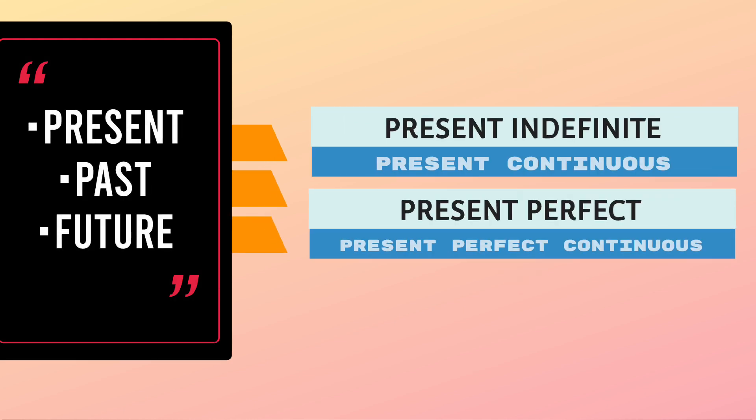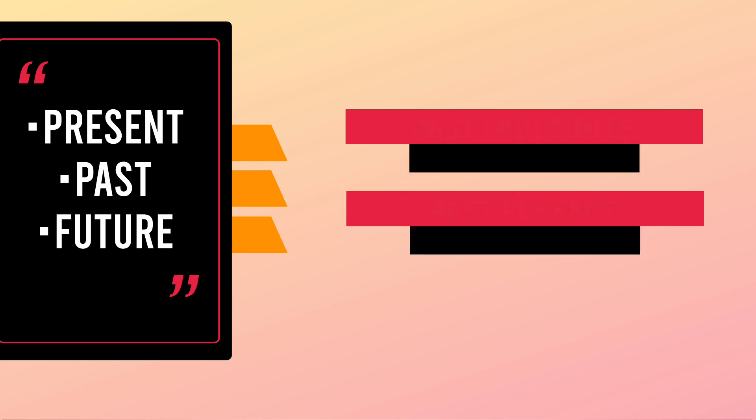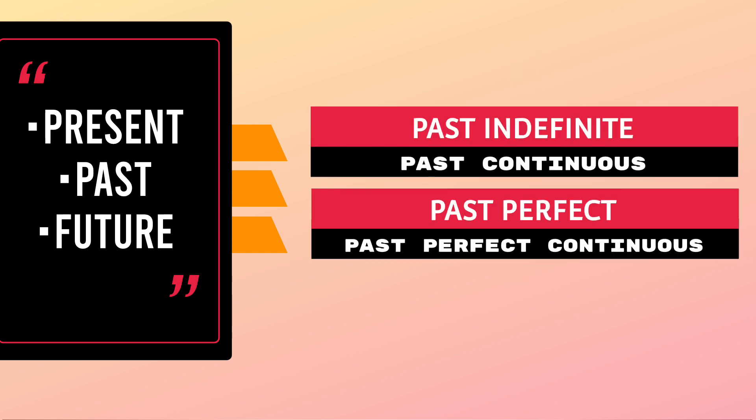Those four parts are: indefinite, continuous, perfect, and perfect continuous. We will discuss these later. In present tense we will get: present indefinite, present continuous, present perfect, and present perfect continuous.